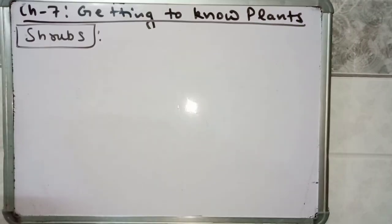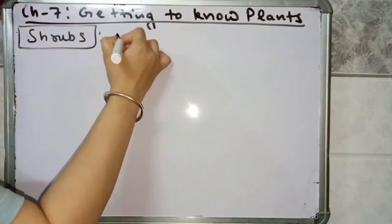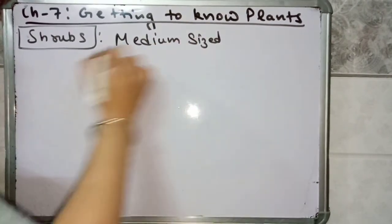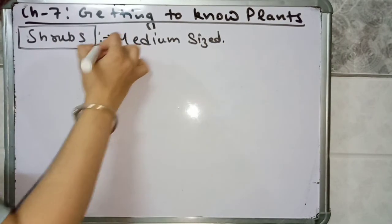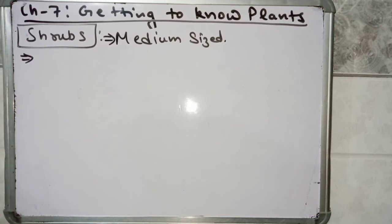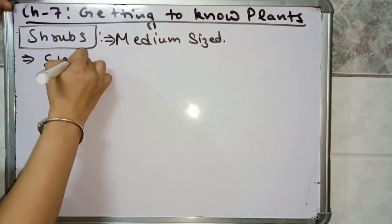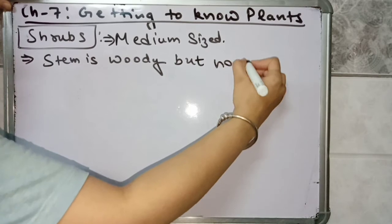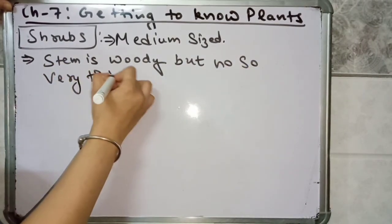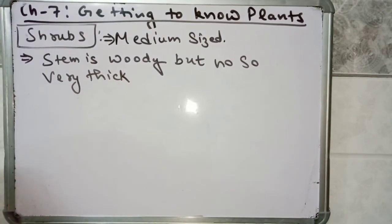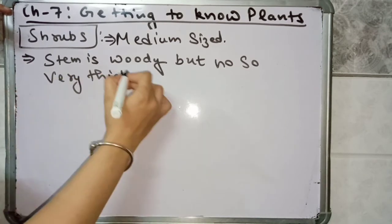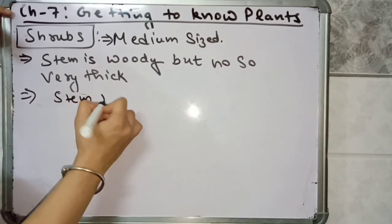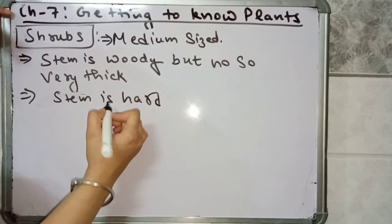Those plants which are known as shrubs — shrubs are medium sized plants. The first characteristic of a shrub plant is that these plants are medium sized. If we talk about its stem, the stem of a shrub is woody but not so very thick, and its stem is hard also.